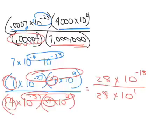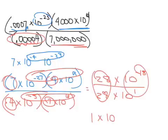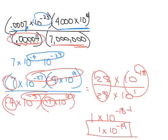Now 28 over 28 is 1, and then we subtract negative 18 minus 1. So we get 1 times 10 to the negative 19th power for our answer, for example 80.4.